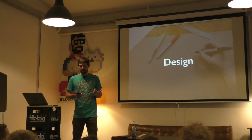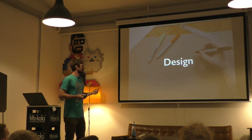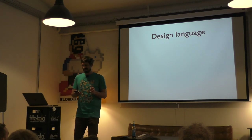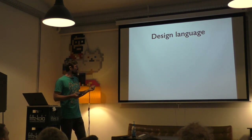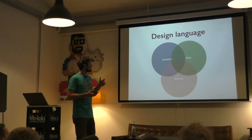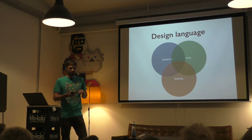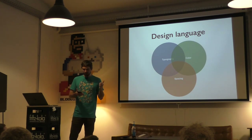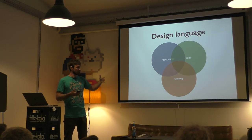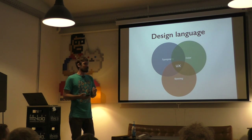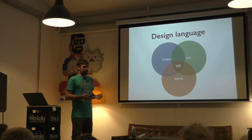And then there's design — design language. If we simplify it a little bit, design language consists of typography, color, and spacing. All three parts play a crucial role in how we design, how we perceive things, and together they form the user experience of the product — digital products in the case of this presentation.